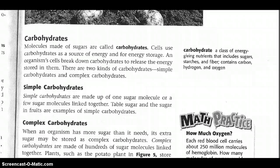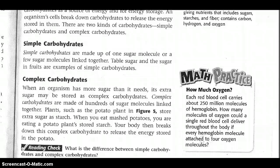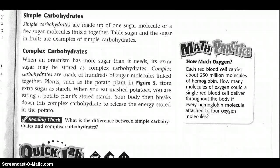Carbohydrates. Molecules made of sugars are called carbohydrates. Cells use carbohydrates as a source of energy and for energy storage. An organism's cells break down carbohydrates to release the energy stored in them. There are two kinds of carbohydrates: simple carbohydrates and complex carbohydrates. Simple carbohydrates are made up of one sugar molecule or a few sugar molecules linked together. Table sugar and the sugar in fruits are examples of simple carbohydrates. When an organism has more sugar than it needs, its extra sugar can be stored as complex carbohydrates. Complex carbohydrates are made of hundreds of sugar molecules linked together. Plants, such as the potato plant in Figure 5, store extra sugar as starch. Your body then breaks down this complex carbohydrate to release the energy stored in the potato.